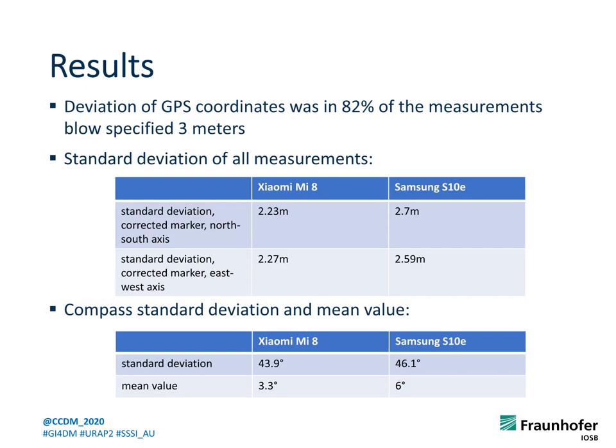The deviation of GPS coordinates was in 82% of measurements below the specified 3 meters. The Xiaomi had slightly better results as expected with the dual-channel GPS. The big problem was the integrated compass. While we have a mean deviation of 3.3 to 6 degrees — which is still not good — the standard deviation of about 45 degrees means that you cannot rely on the compass at all.